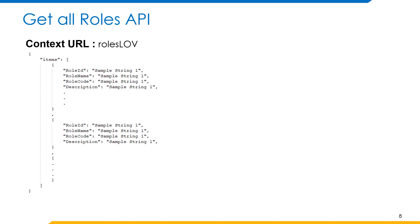GetAllRoles API: The roles LOV resource includes the list of values for roles. The HTTP method used is GET. Here you can see the example response body of the GetAllRoles API. Basically, it contains roles information in the form of a list called items. The items list contains information such as role ID, role name, role code, description, and many more.